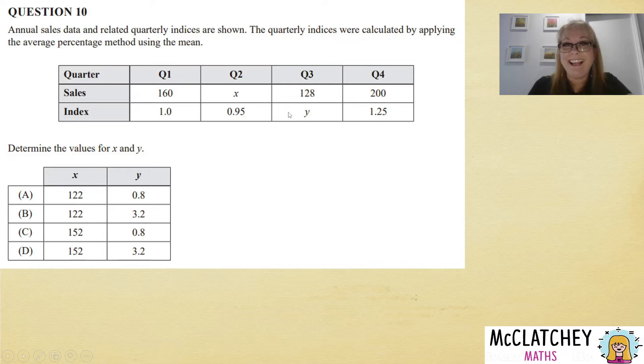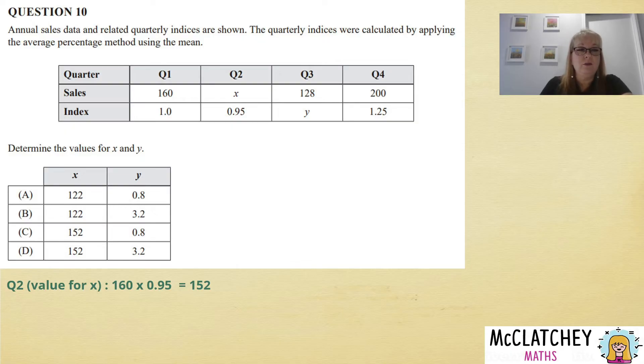Okay, so firstly, what we're seeing here is that this is 0.95, or 95%, of the value of 160. So we're going to multiply 160 by 0.95—we get the value of 152. That means we can actually rule out A and B now because they say 122. So this is 152, which means C or D. A and B are gone.